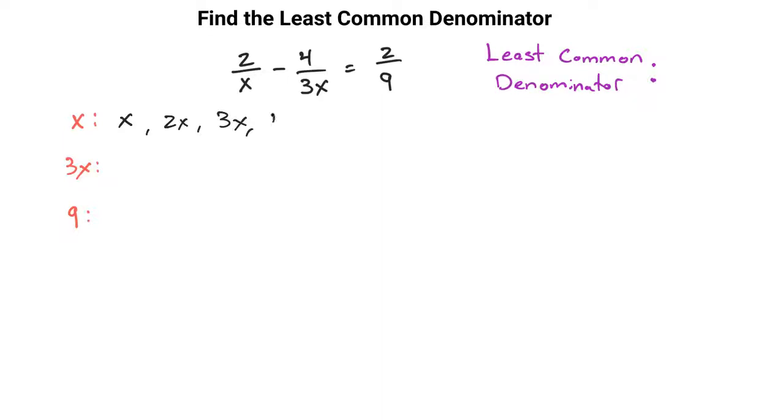So on and so forth until you find something which is the same. Here you'd have a 3x, 6x, 9x, so on and so forth. And what we see right away is that we have a 3x here and a 3x there. Those are the same.